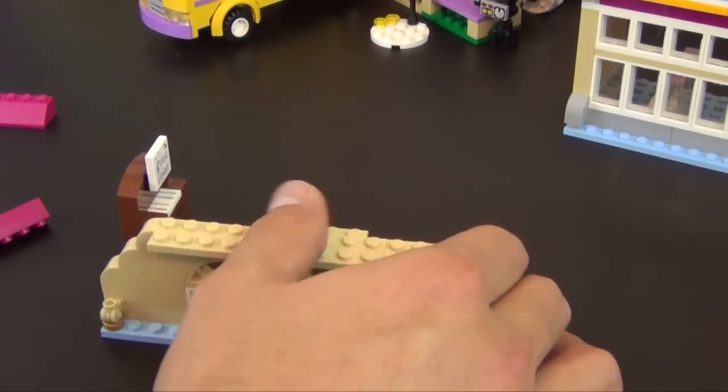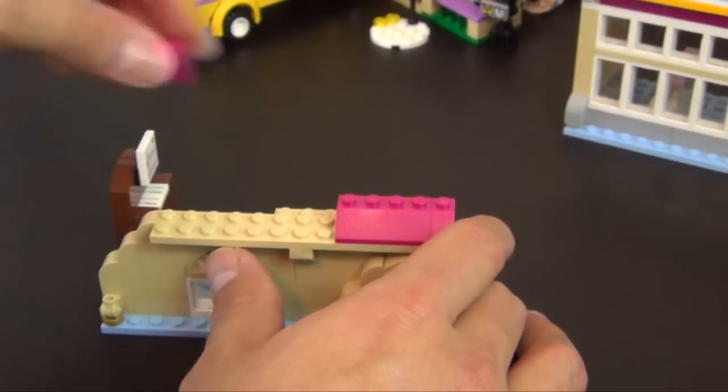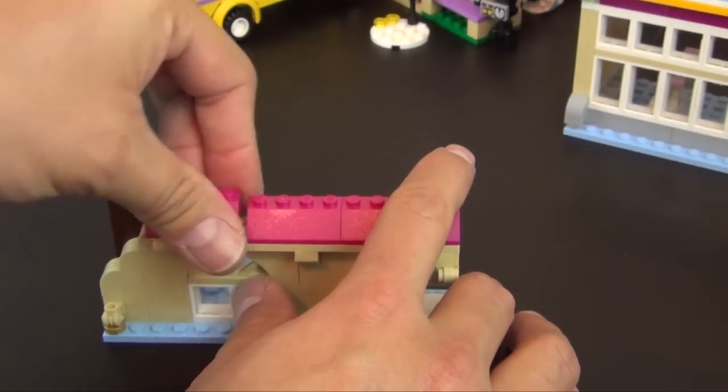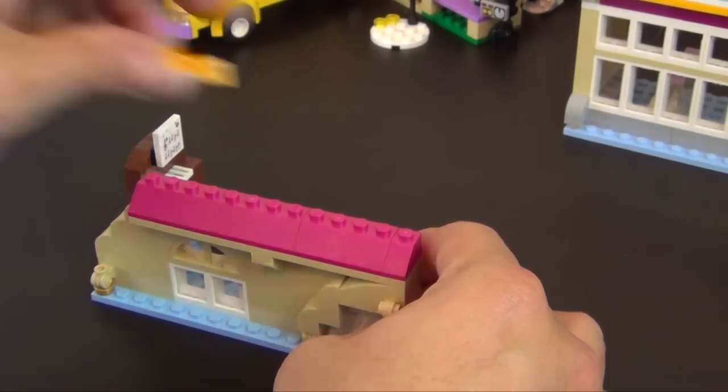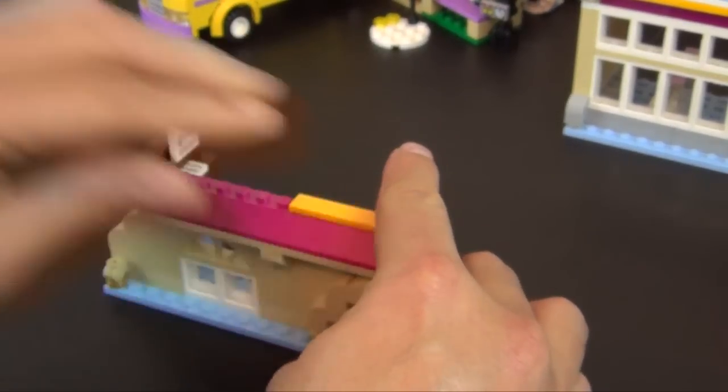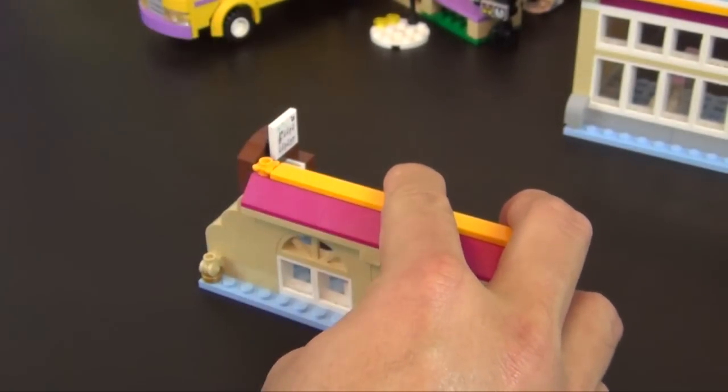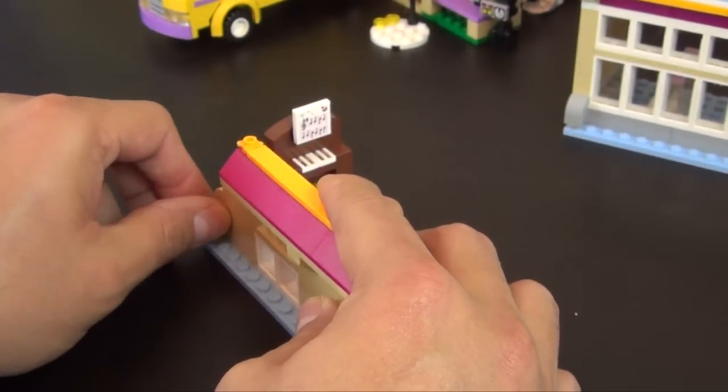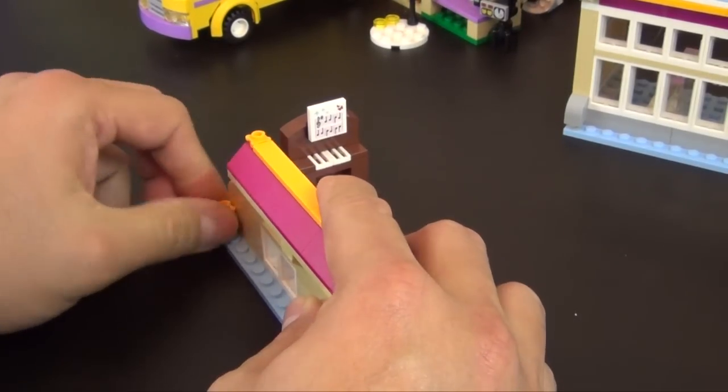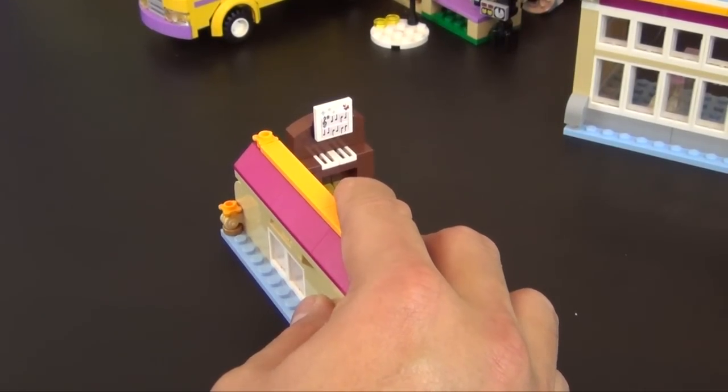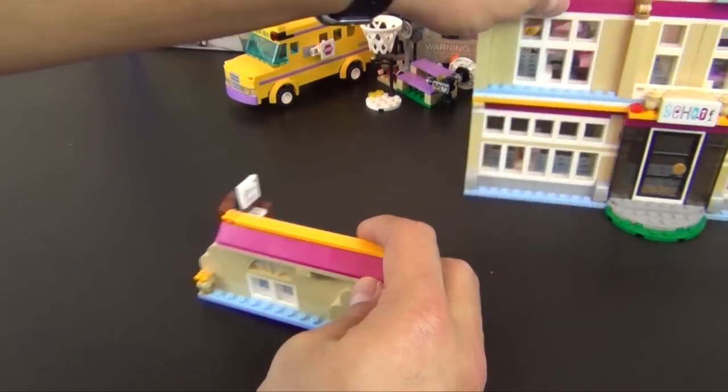Turn this around. Do our slopes. Then we have our tiles. Little flower pieces. And that completes this portion.